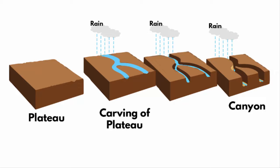Continuous flow of rivers and wind activity carves out steep valley walls to form a canyon, and this kind of process takes millions of years. So that's how canyons are formed.